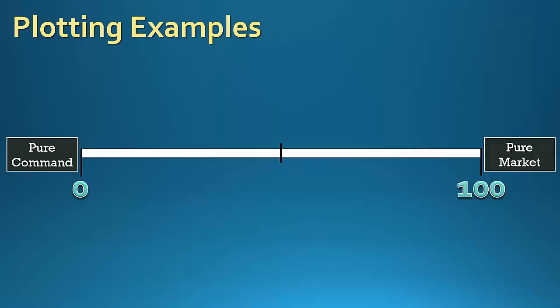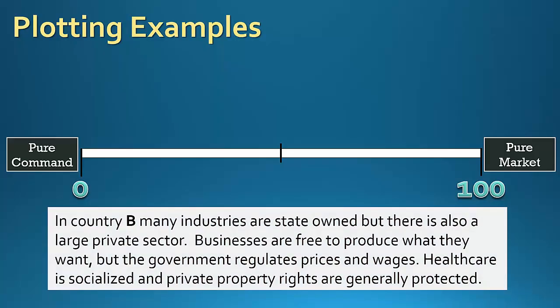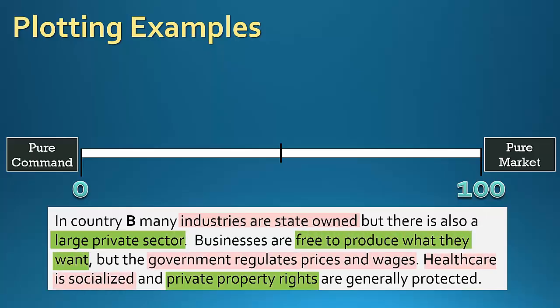Let's try example B. In country B, many industries are state-owned, but there's also a large private sector. Businesses are free to produce what they want, but the government regulates prices and wages. Health care is socialized, and private property rights are generally protected. As you can see, there are both market terms and command terms here — it's pretty evenly balanced. So I would put this one somewhere around the middle, at about 50%.